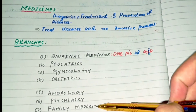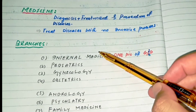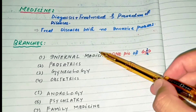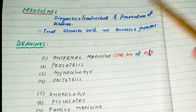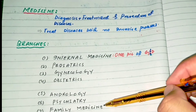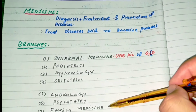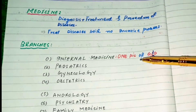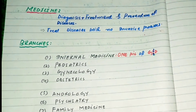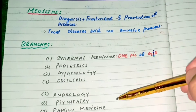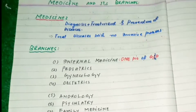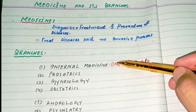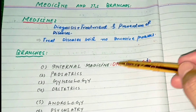Internal medicine and family medicine are similar, but in internal medicine we study the diagnosis, treatment, and prevention of disease only in adults. In family medicine, we study diagnosis, treatment, and prevention of disease in all age groups, including children and adults. Family medicine also has sub-branches, which are subspecialties of internal medicine.